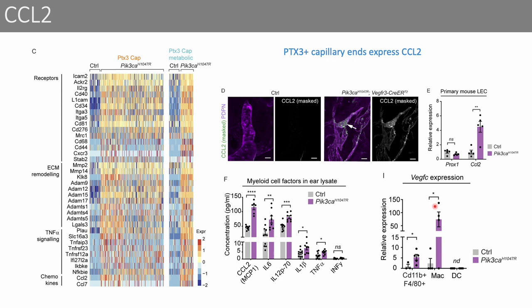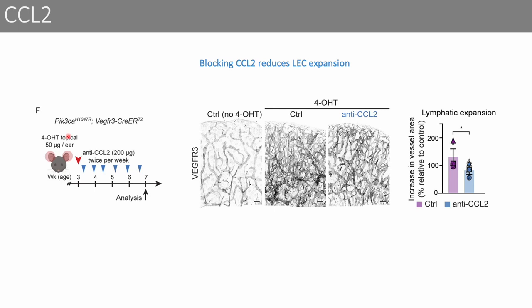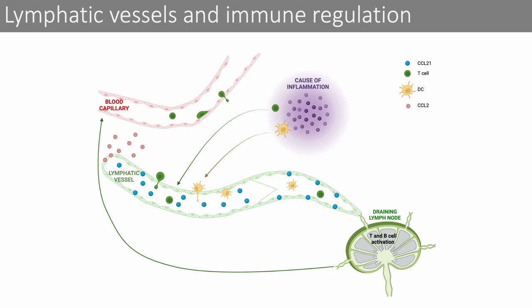Not only that, but we could see that the infiltrating macrophages were also producing high levels of VEGFC, which is a driver of lymphatic endothelium proliferation, suggesting a positive feedback loop between CCL2-producing mutant LECs and infiltrating VEGFC-producing macrophages. To test this hypothesis, we treated animals with an anti-CCL2 antibody after induction of the mutation, and indeed observed a decrease in the expansion of the lymphatic endothelium. So we can now add CCL2-producing LECs at the very end of lymphatic capillaries in the context of lymphatic malformation. Importantly, CCL2 will recruit macrophages that in turn release lymphangiogenic VEGFC, which will in turn worsen disease progression.